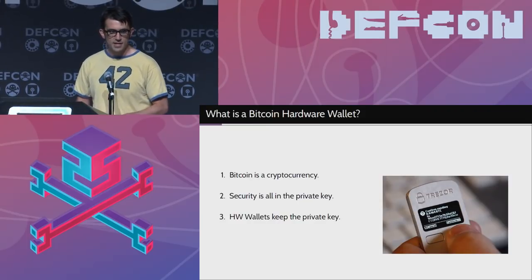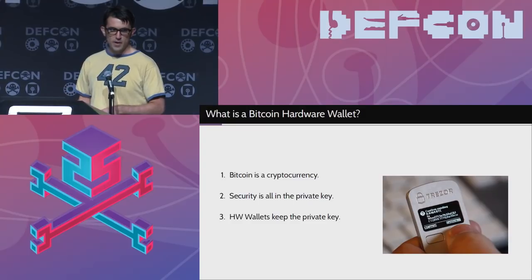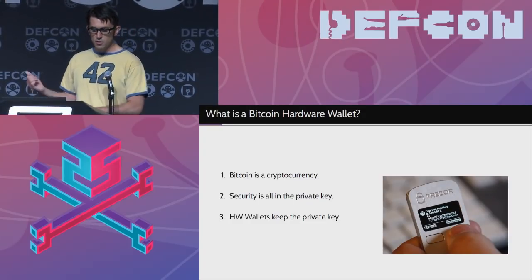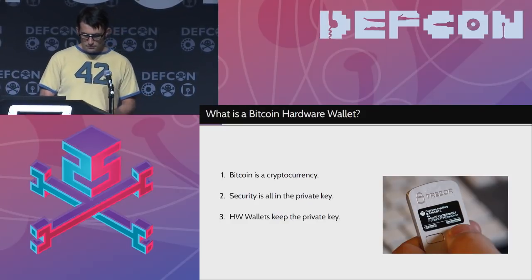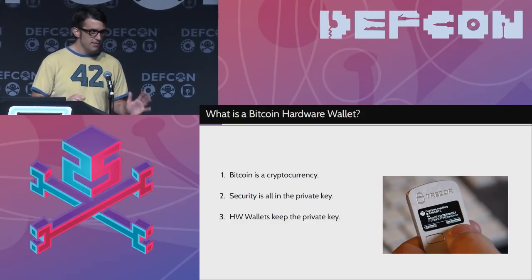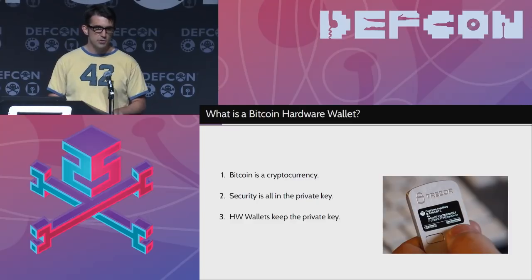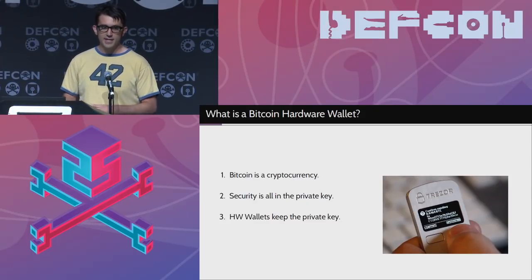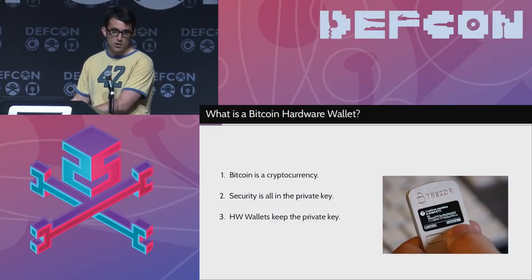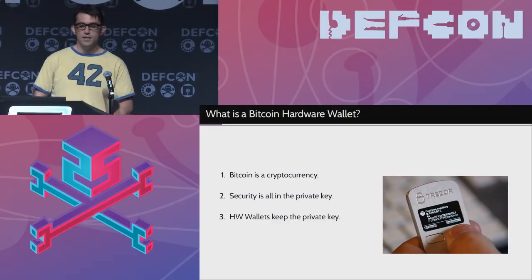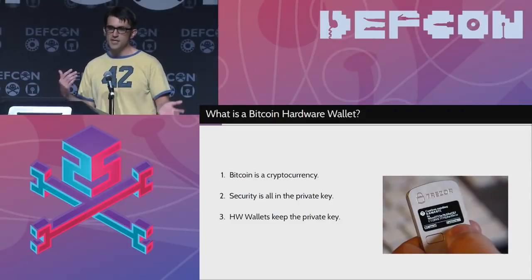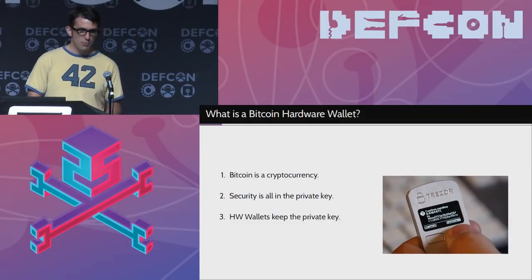A hardware wallet is a dedicated embedded device. There are a few manufacturers. The two big ones are the Trezor hardware wallet, which is what you see on the slide, and the Ledger. They connect to your computer over USB. When you want to sign a transaction, you plug in the hardware wallet and your computer talks to it saying 'please sign this for me.' Your private key never gets onto your computer.